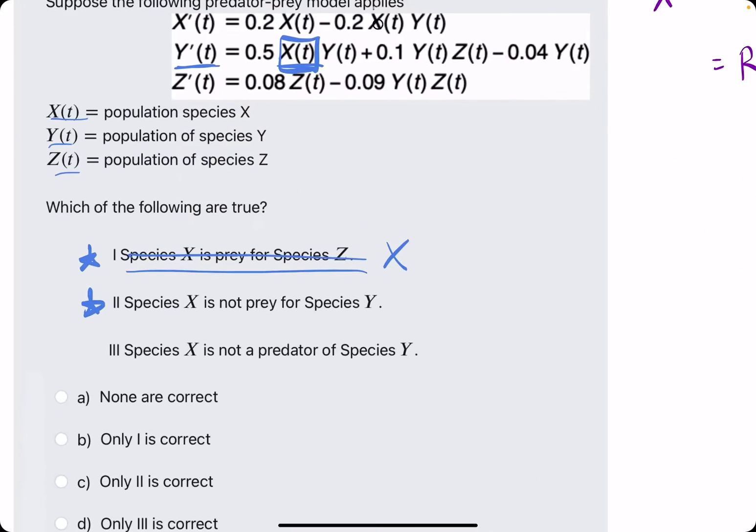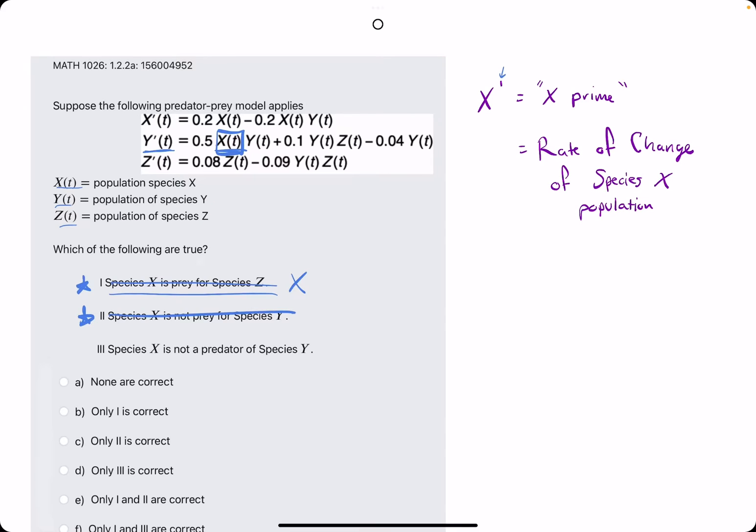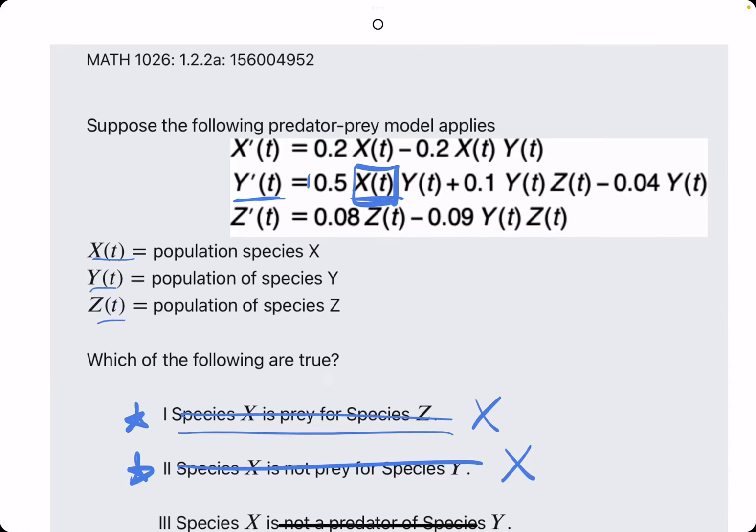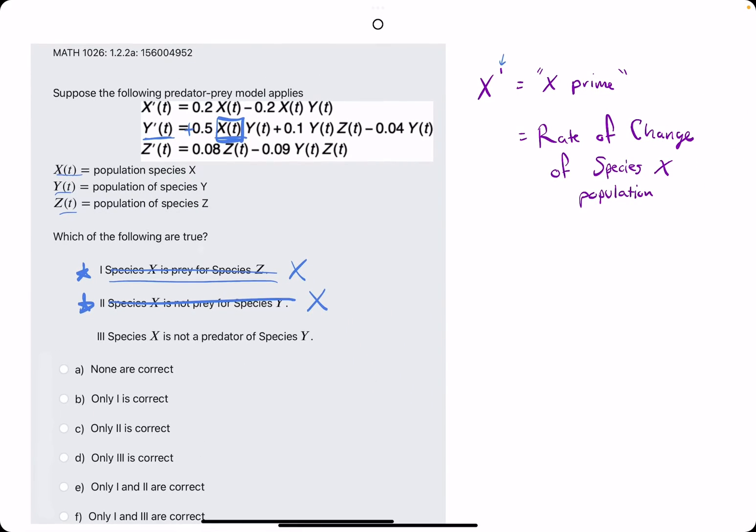And so they're saying X is not prey for Y, but it's just the opposite. I believe X is prey for Y because there's a positive coefficient where the X is in the Y prime equation.